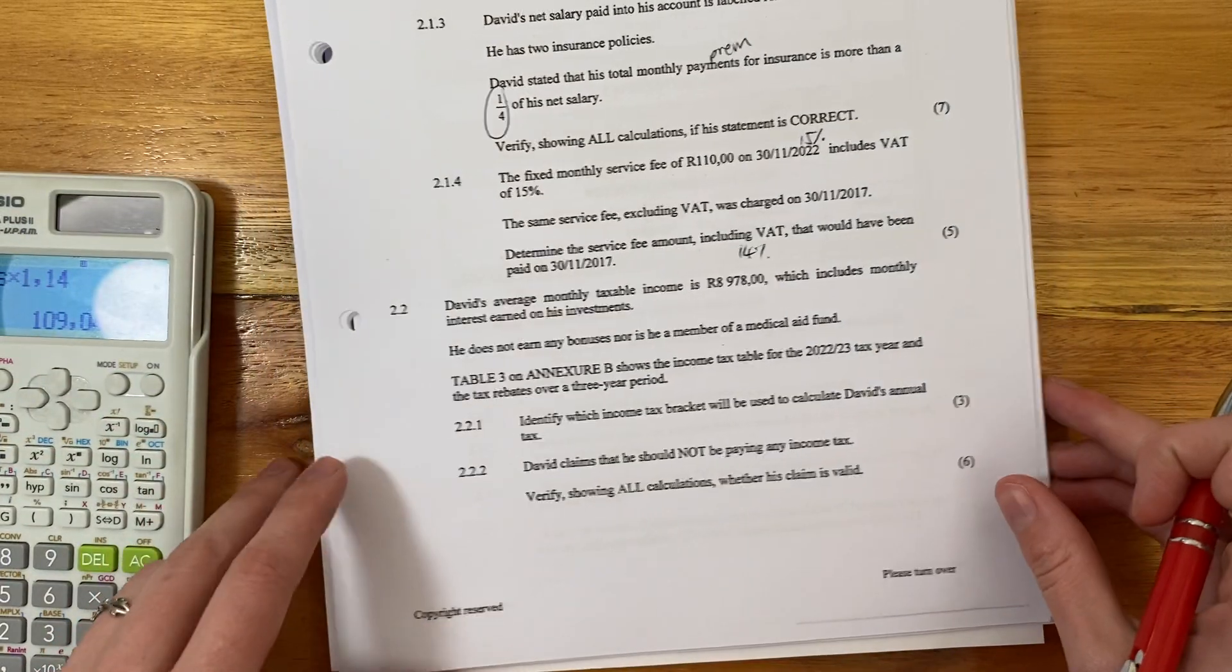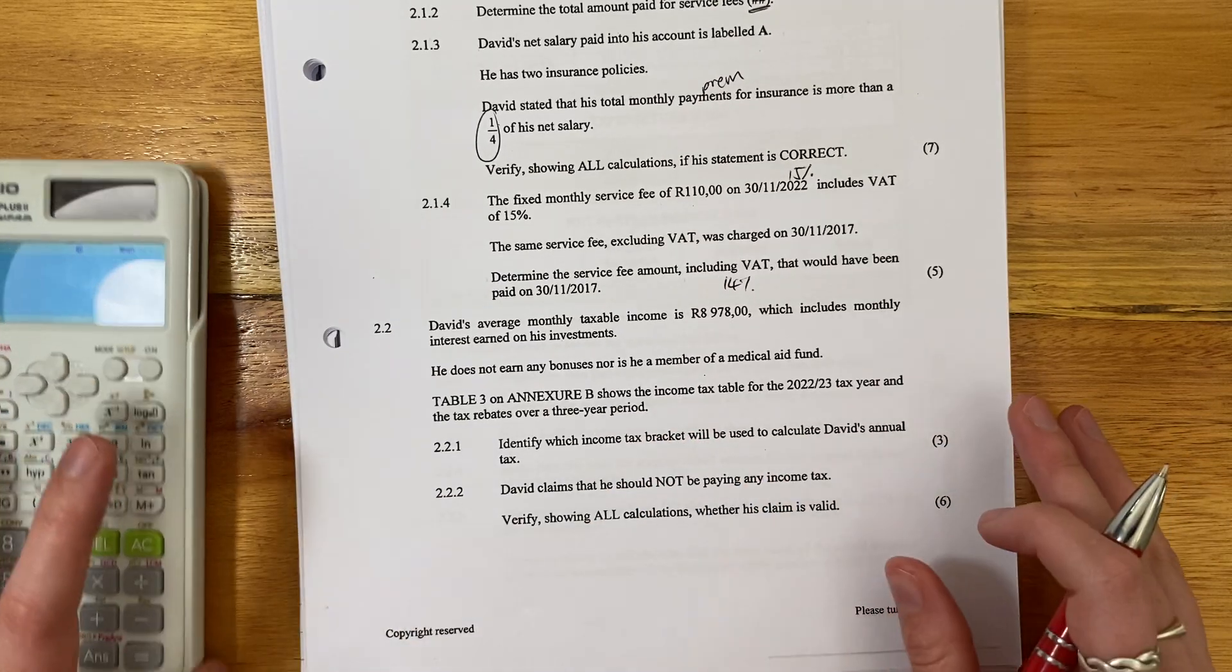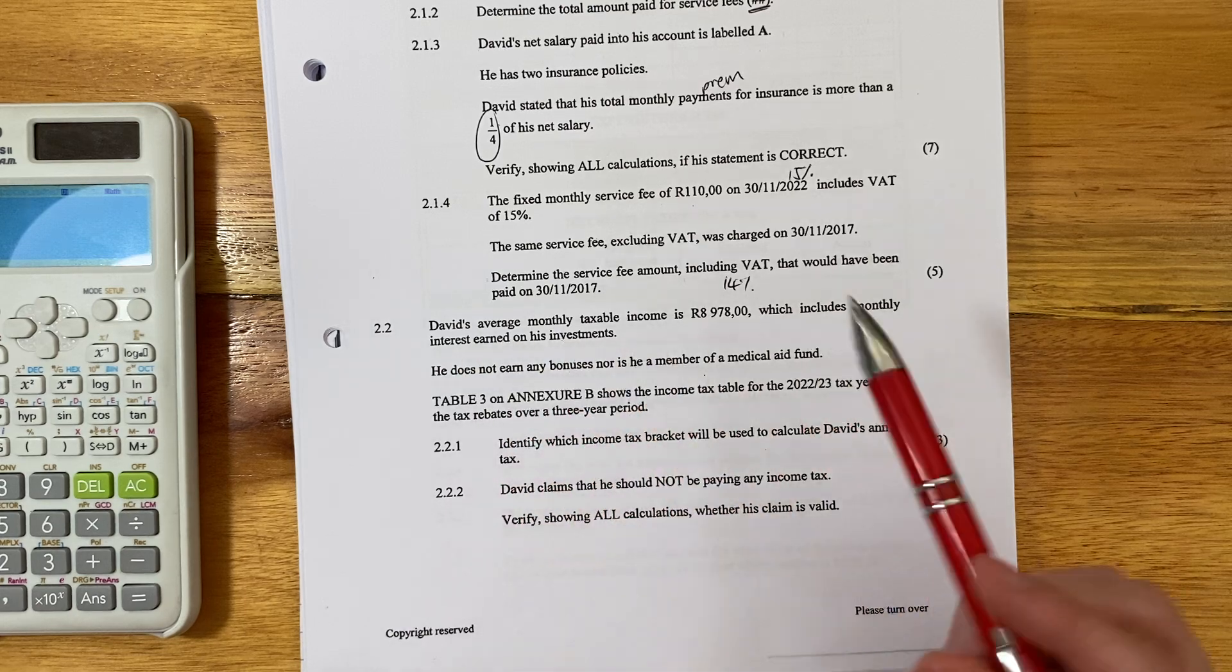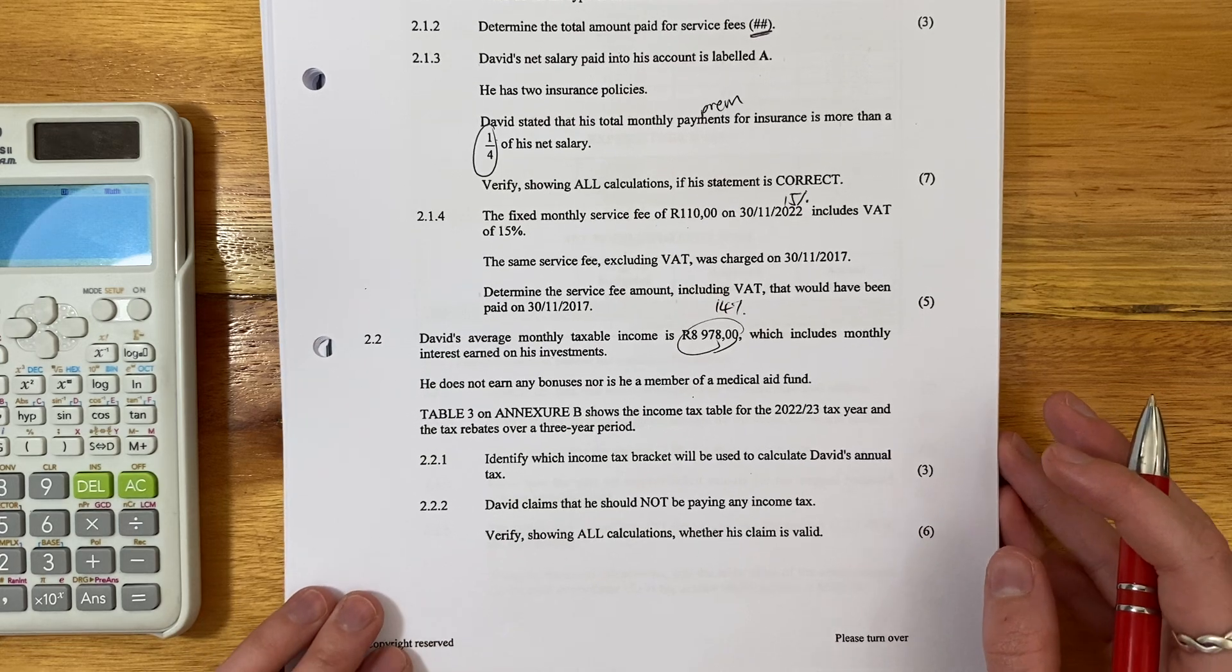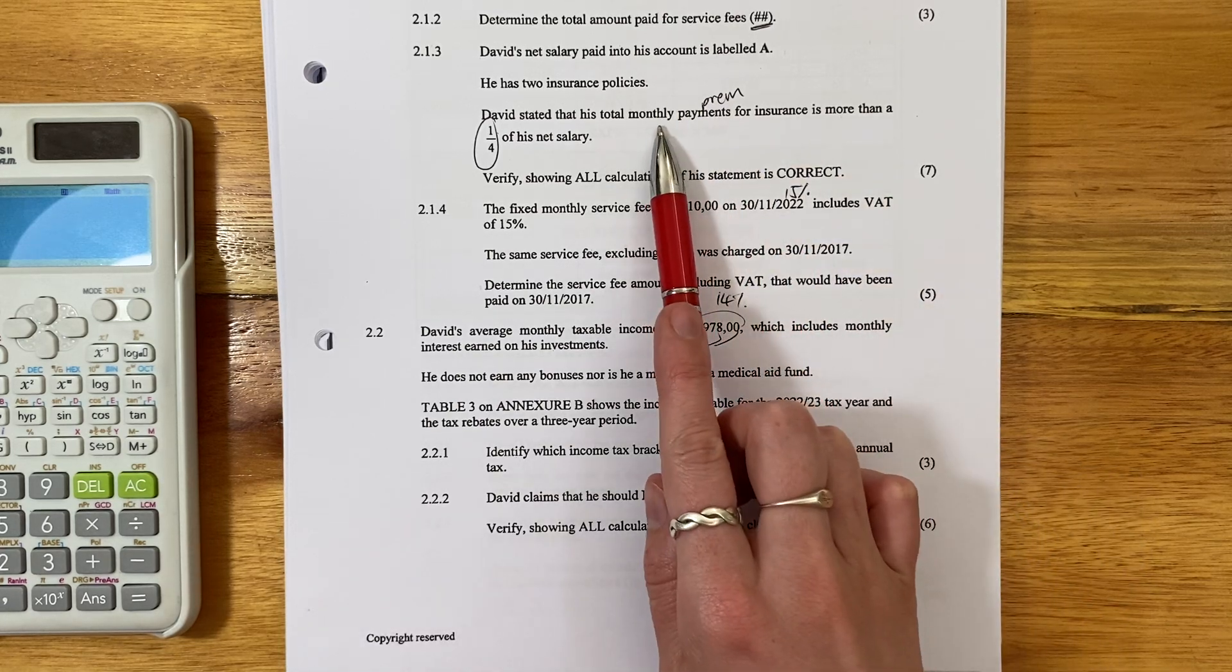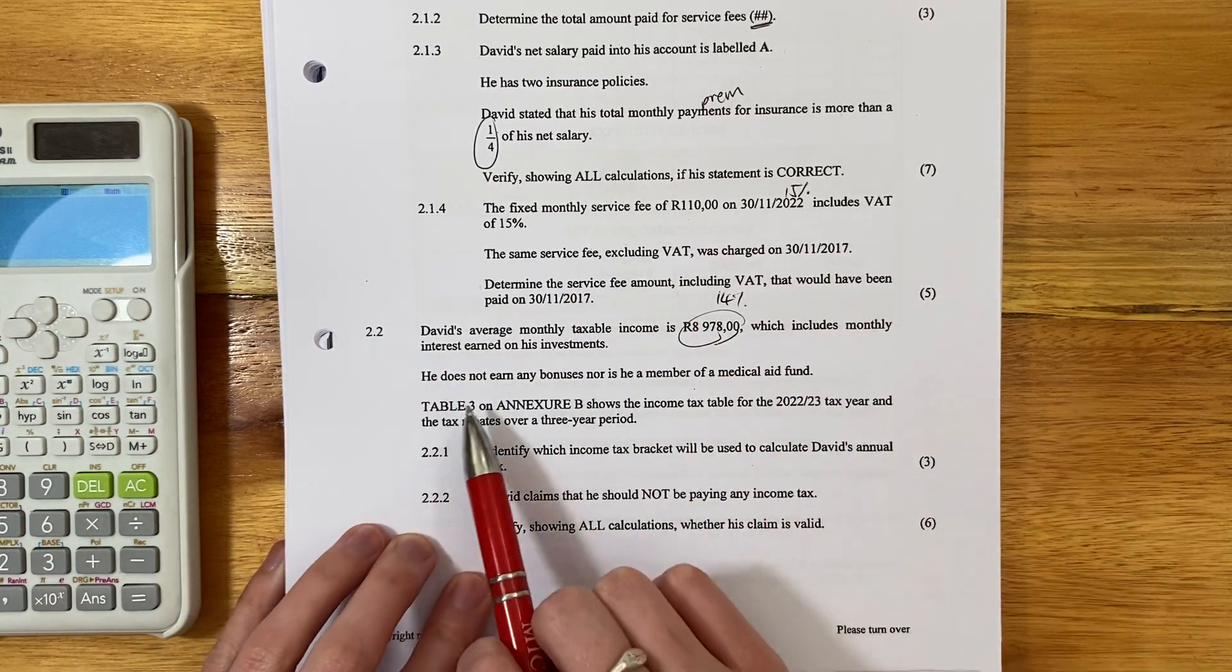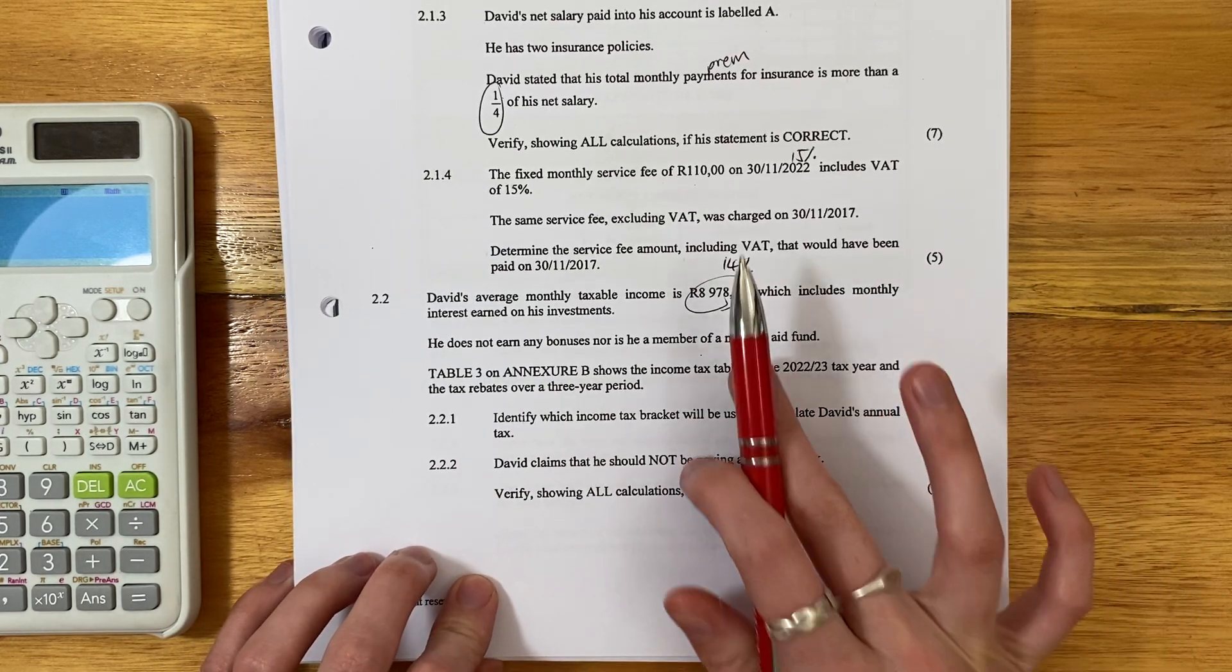Let's move on to 2.2. 2.2 is a tax question. And I must be honest with you, a particularly easy tax question. I would expect that you would get a more difficult one than this. But let's look at this question. So David, we saw David from our previous question. David's average monthly taxable income is this much, which includes monthly interest earned on his investments. That's quite important because we worked out a completely different salary at the top. This one includes investment income. Then it says he does not earn any bonuses and he's not a medical aide. Medical aide is quite expensive.